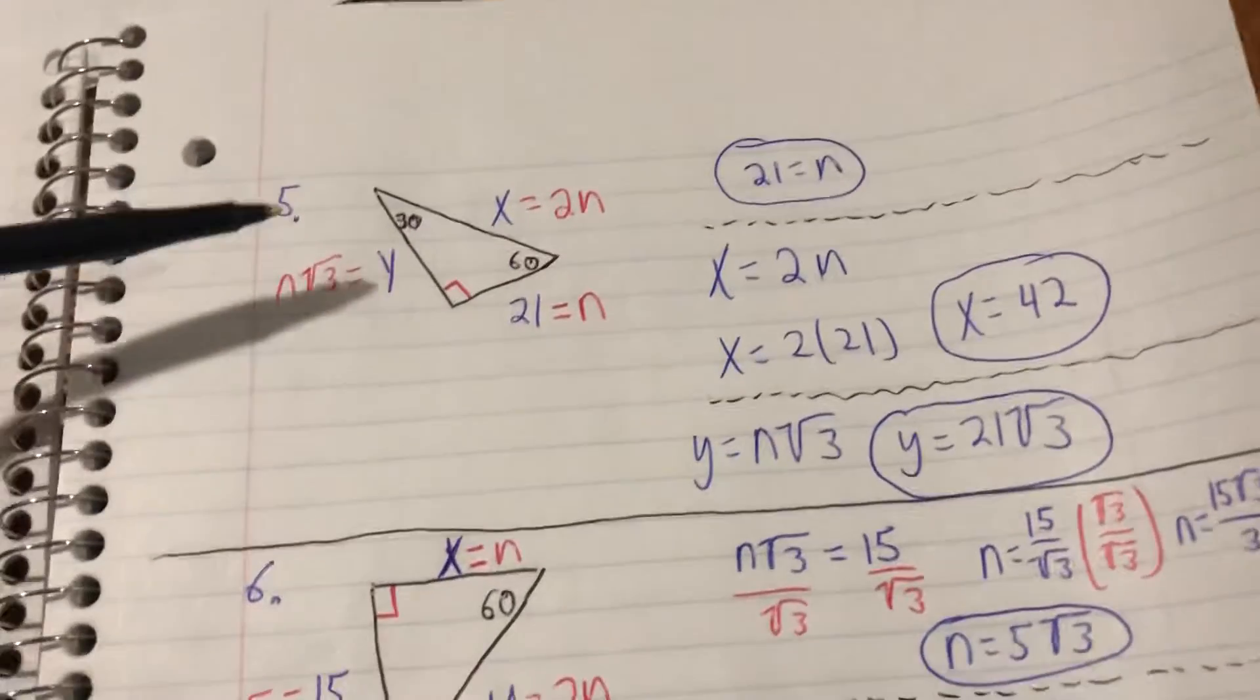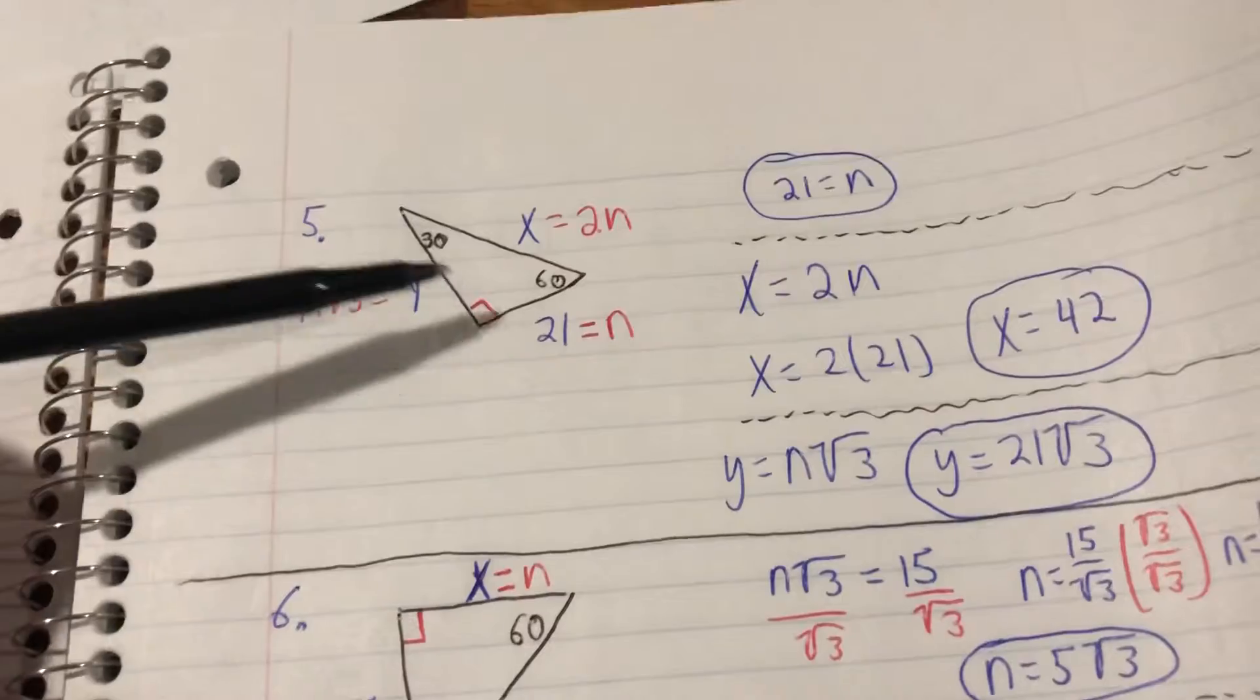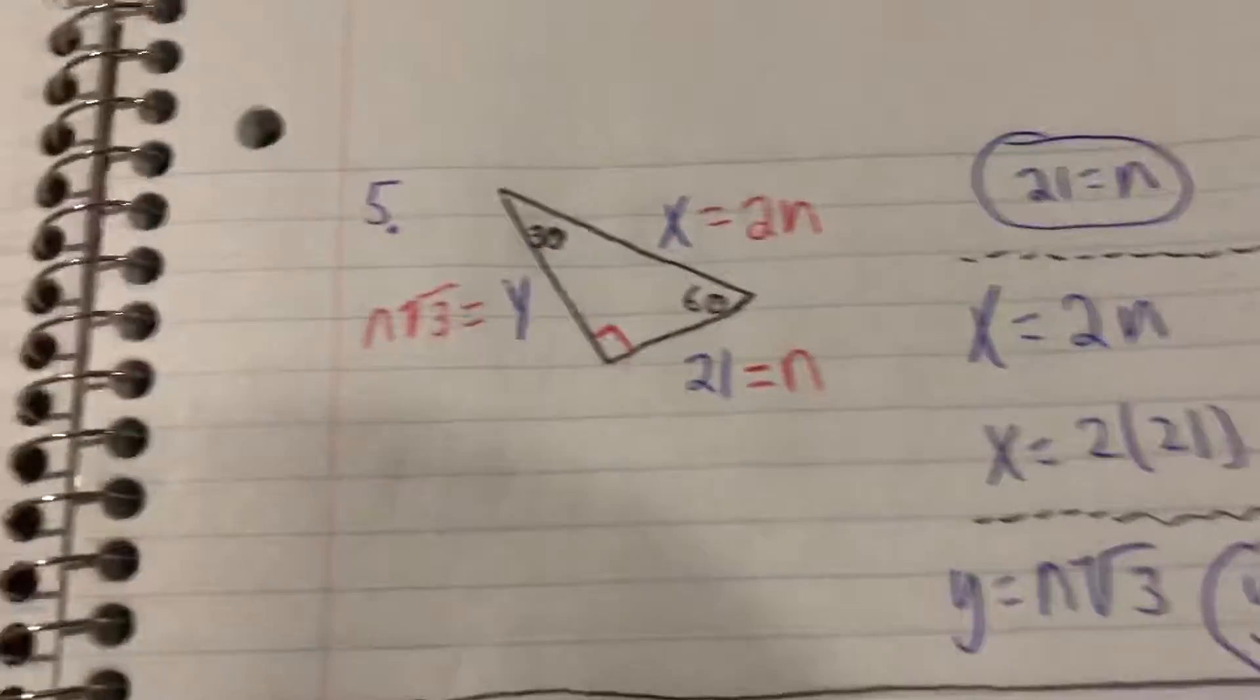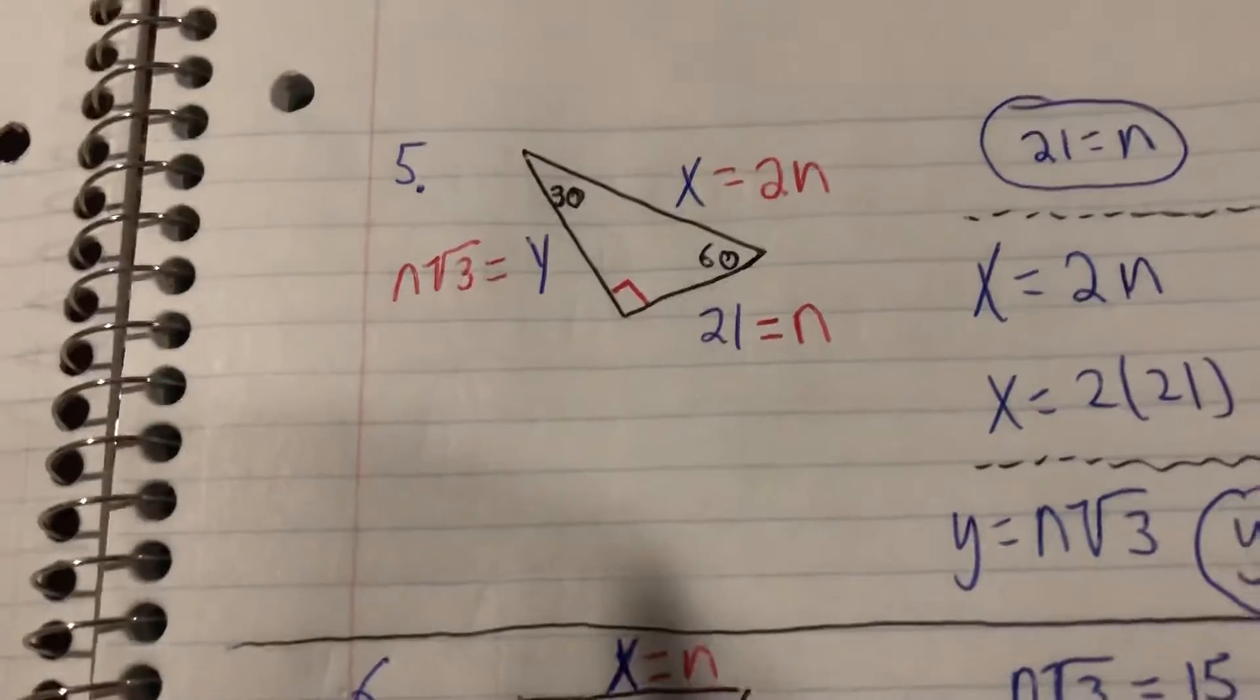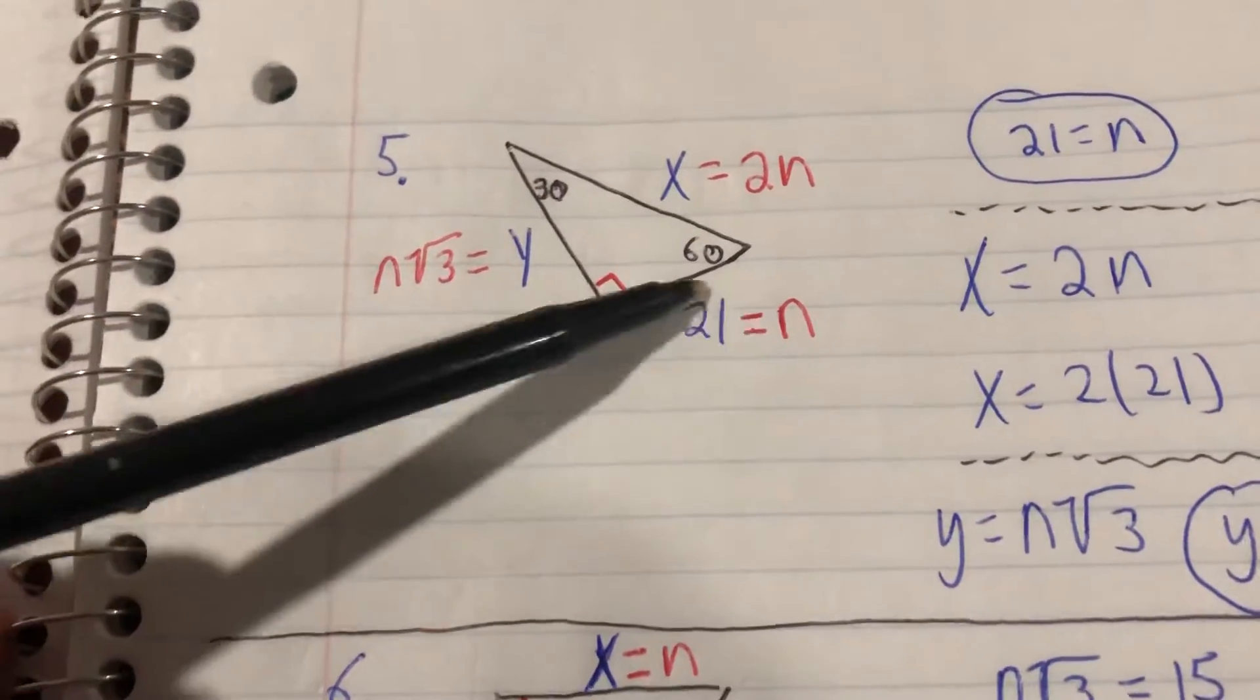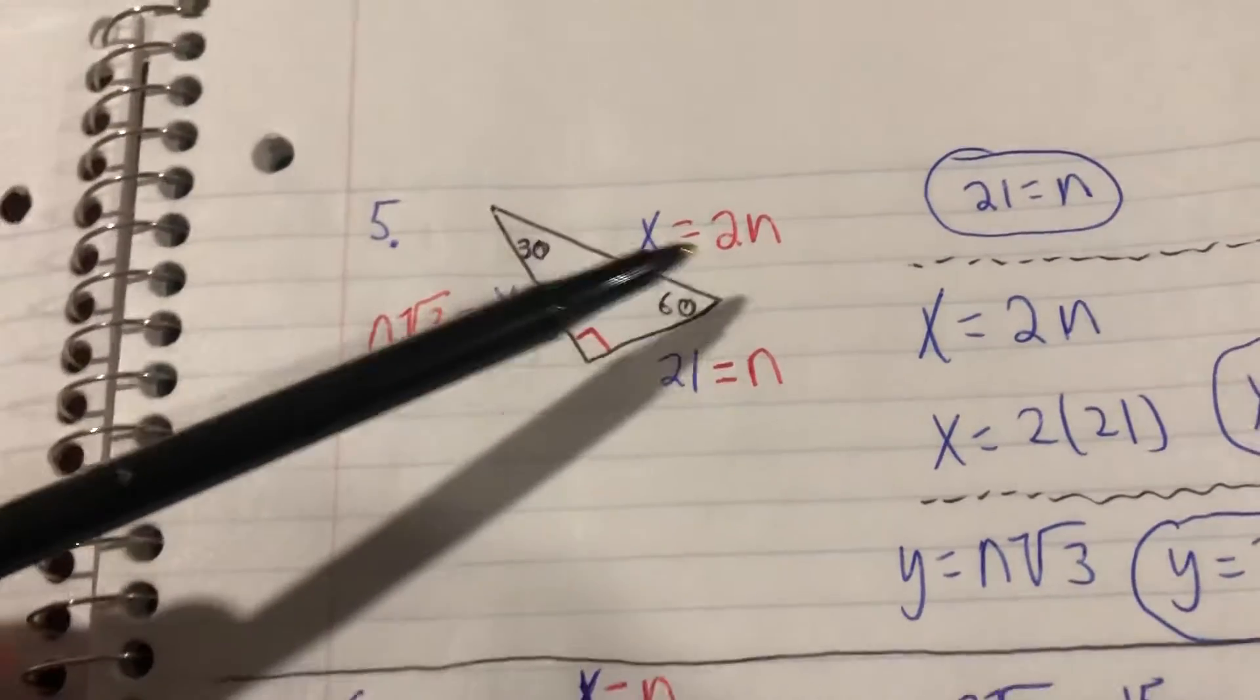Looking at number five, we've got a 30-60-90 triangle. We're given the side opposite from 30 and we're trying to find the other two sides. So first thing I do every time I approach one of these problems is start off with my labels: opposite from 30 we're setting that equal to n, opposite from 60 we're setting that equal to n√3, opposite from 90 we're setting that equal to 2n.